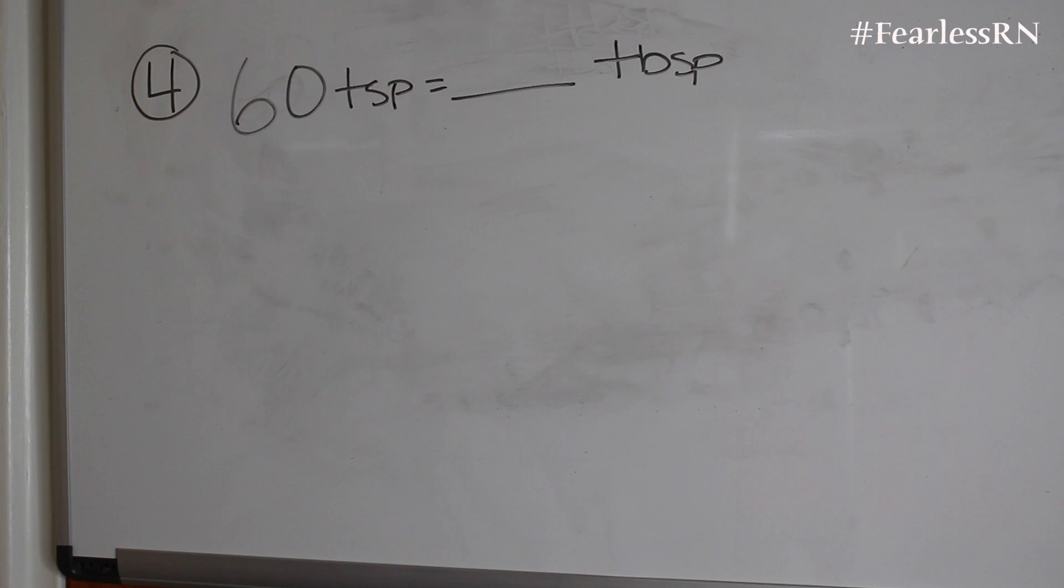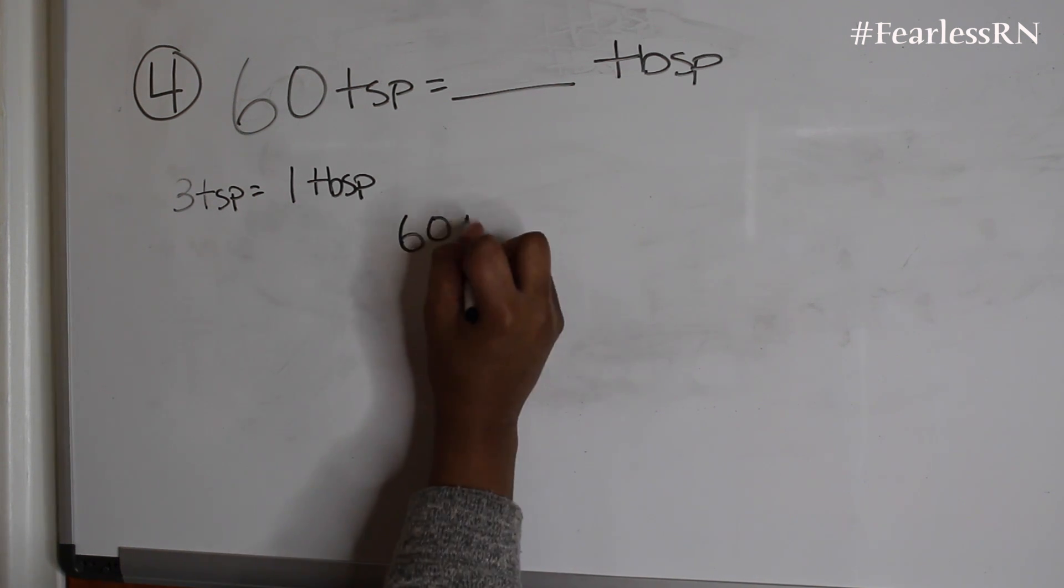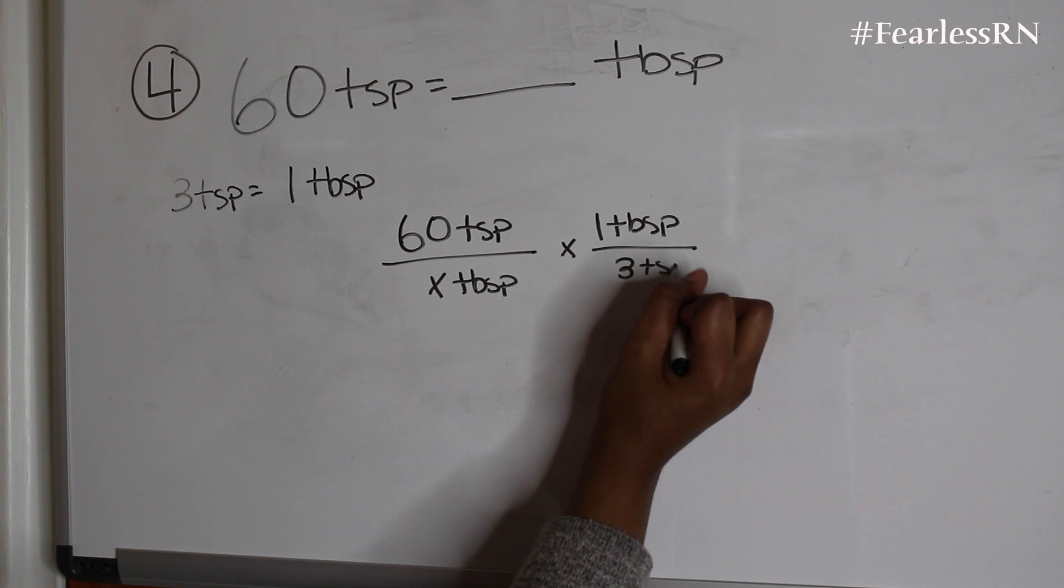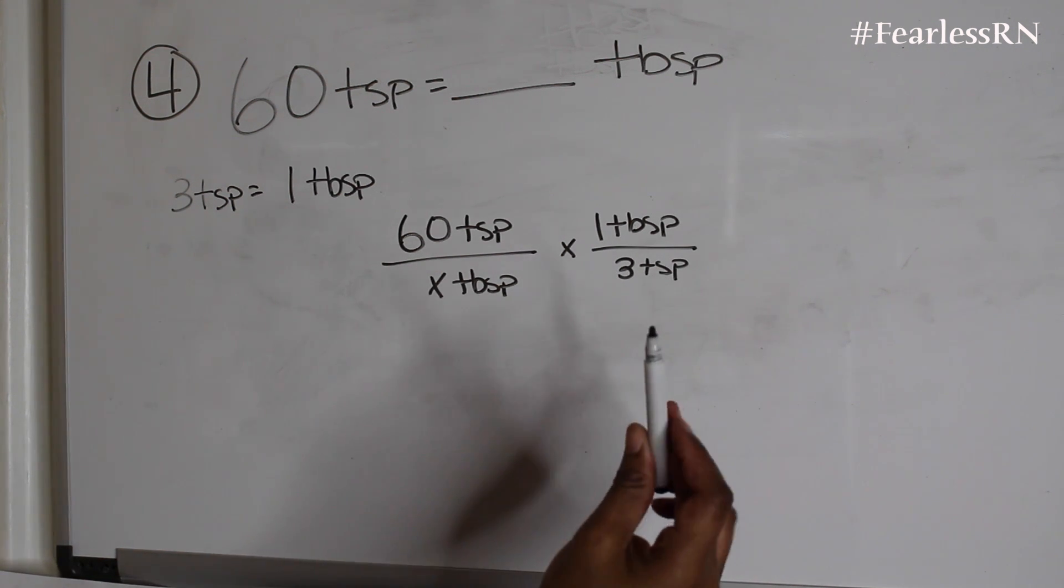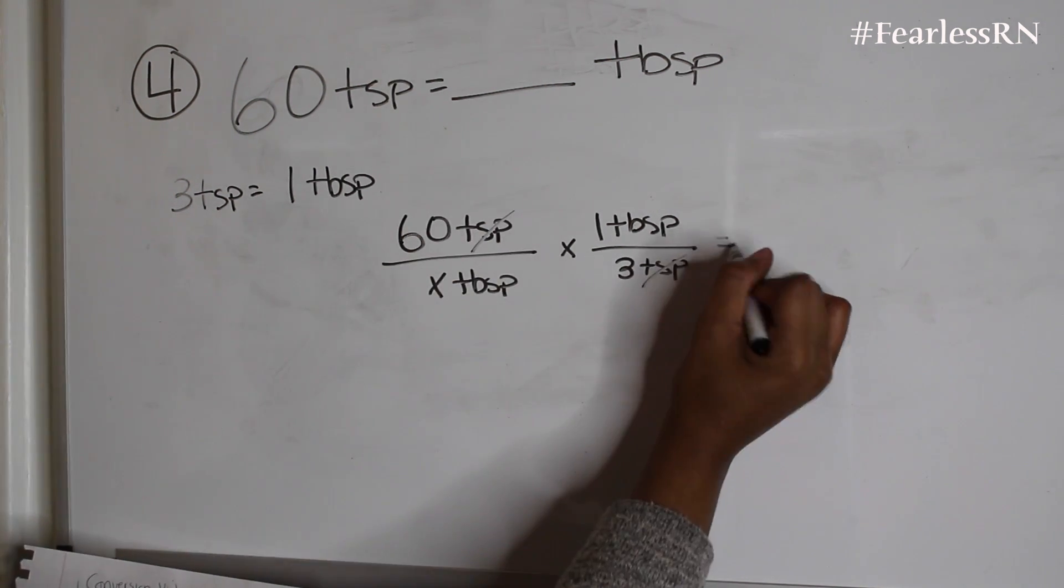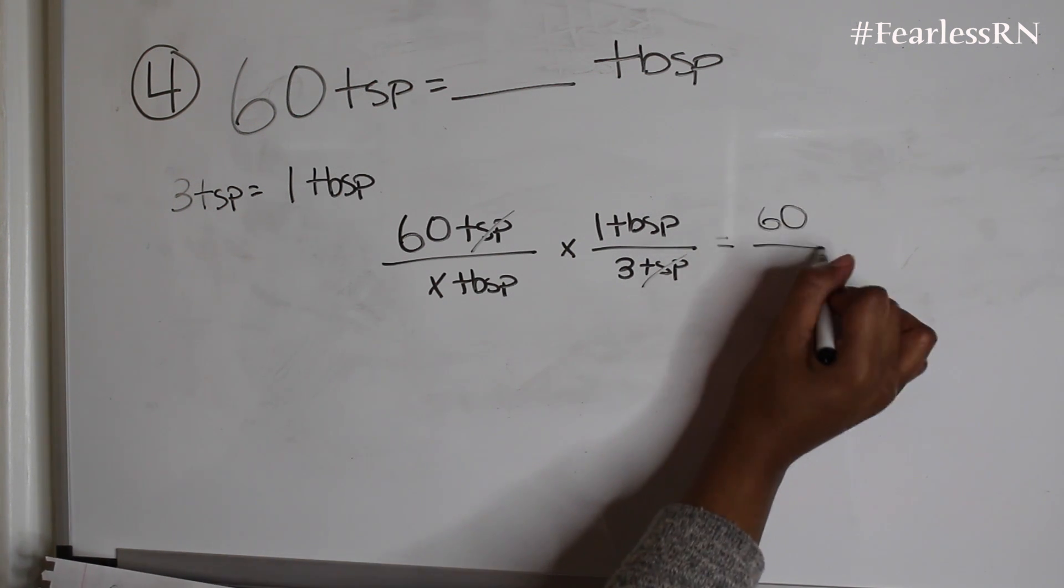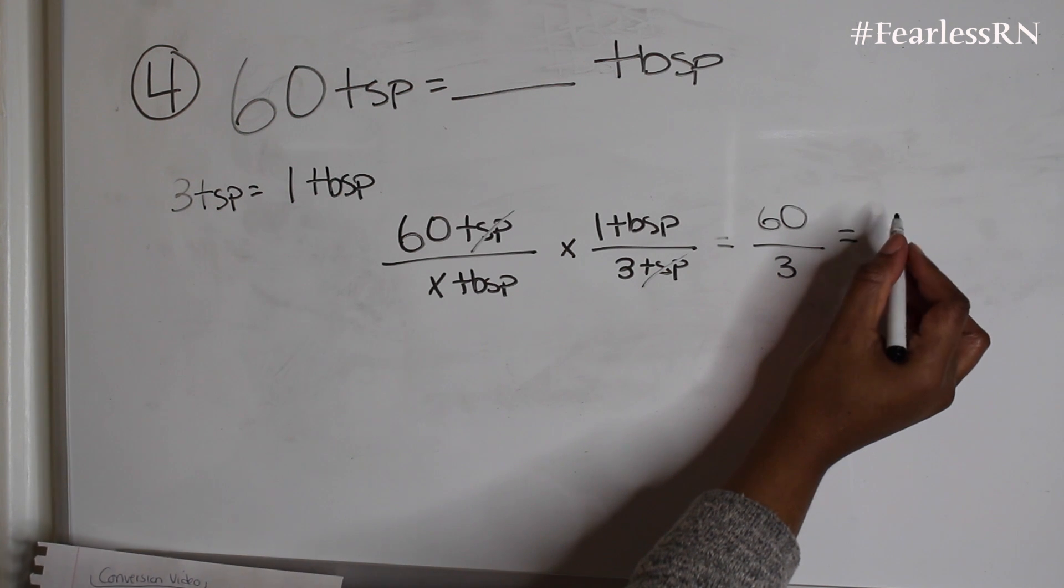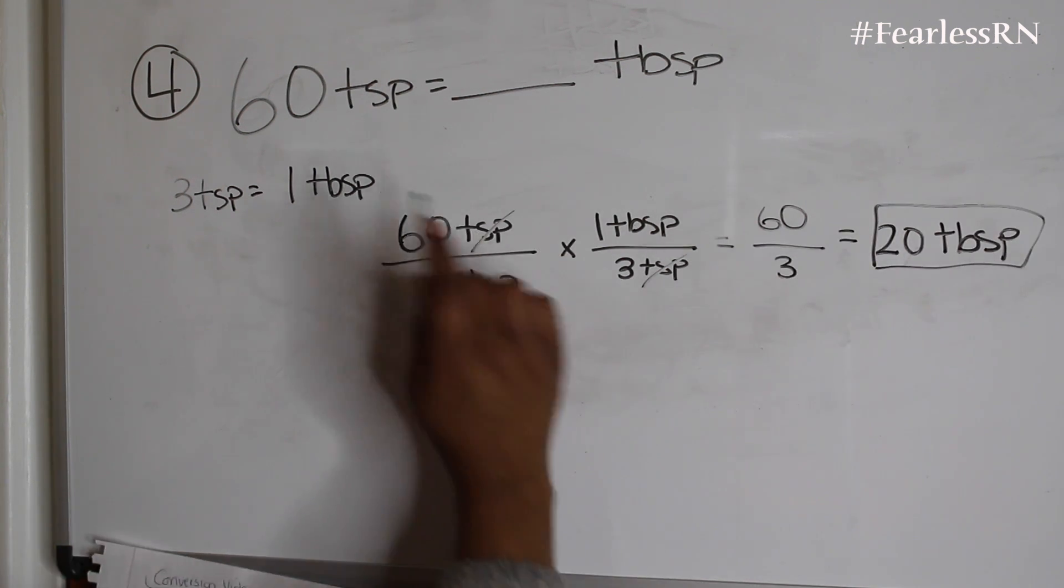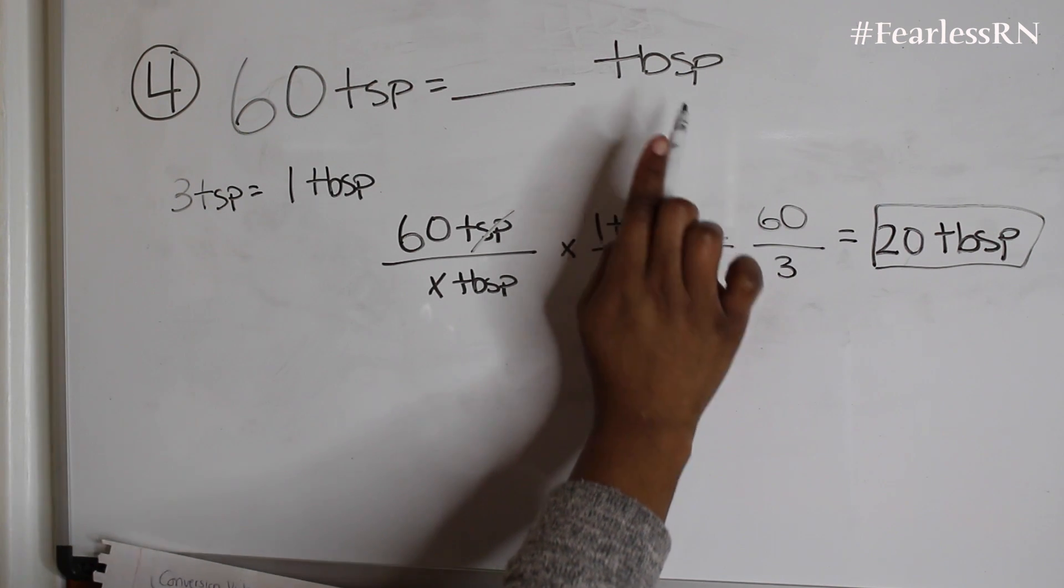Okay, now the next problem is 60 teaspoons equals how many tablespoons? So going back to the metric table, we know that 3 teaspoons equals 1 tablespoon. Now let's set up our problem. The goal is to get to tablespoons, right? So I'm going to cancel out the teaspoons and now we're going to multiply straight across. So 60 times 1 is 60 and 3, and you divide that and you'll be getting 20 tablespoons. So 60 teaspoons equals 20 tablespoons.